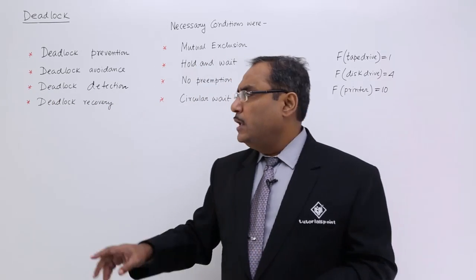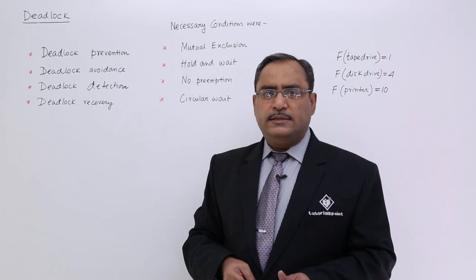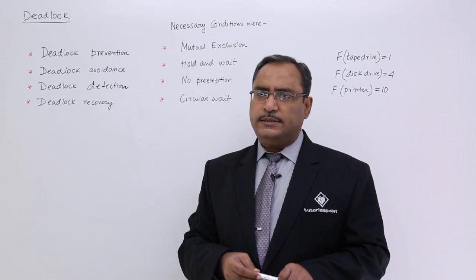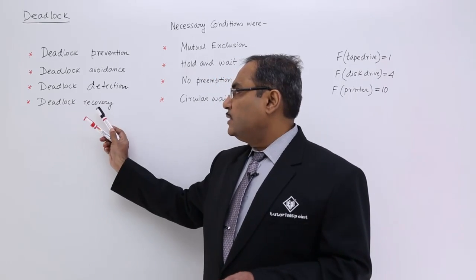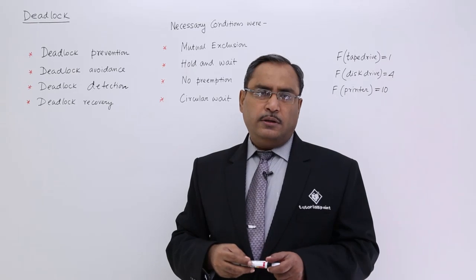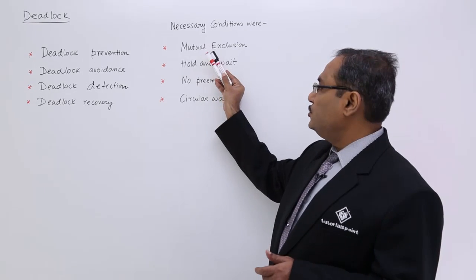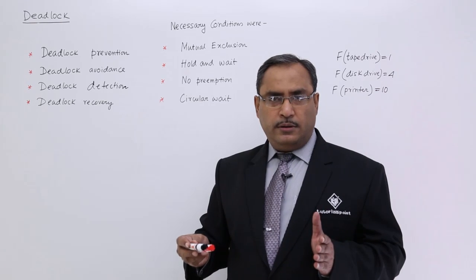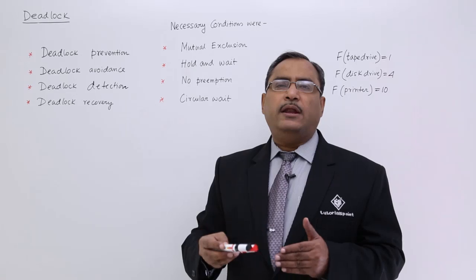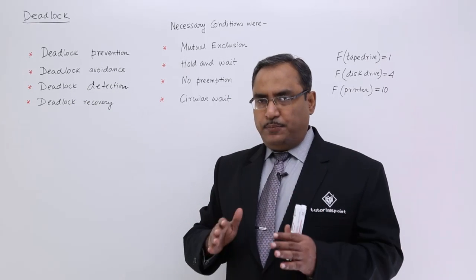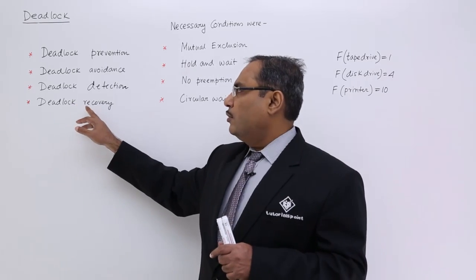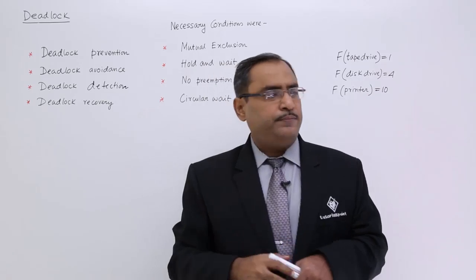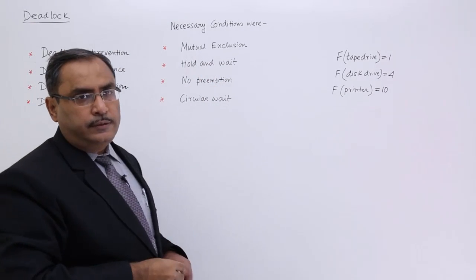Deadlock detection will detect that. And what about deadlock recovery? If deadlock detection detects that a deadlock has really occurred, then a recovery routine will be initiated by the operating system to retrieve the system from the deadlock situation — that is known as deadlock recovery. So in summary: deadlock prevention eliminates at least one of the causes; deadlock avoidance uses a prior database regarding allocation and availability; deadlock detection checks whether postponed progress is really due to deadlock; and deadlock recovery retrieves the system once deadlock is confirmed.